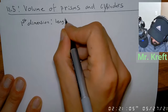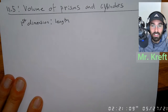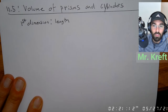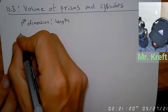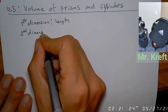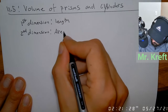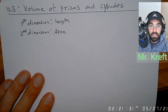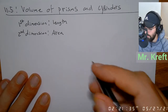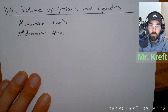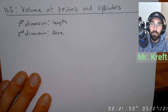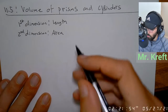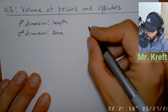The first dimension is length — if something is seven feet long, that's the first dimension. The second dimension is area. To go from one dimension to the next, you can think of it as movement. A lot of people think area is just two lengths, but it's really length times width.